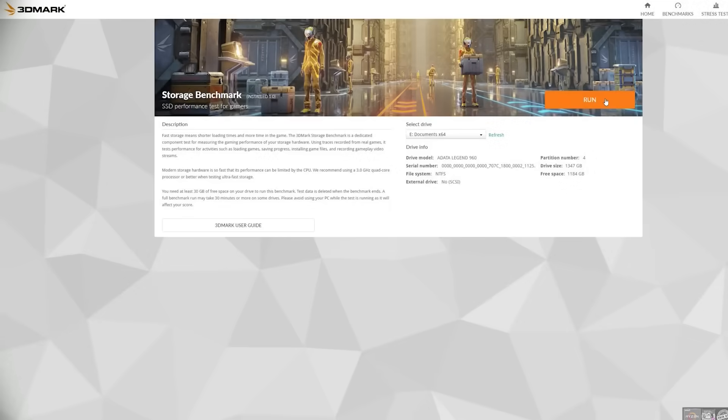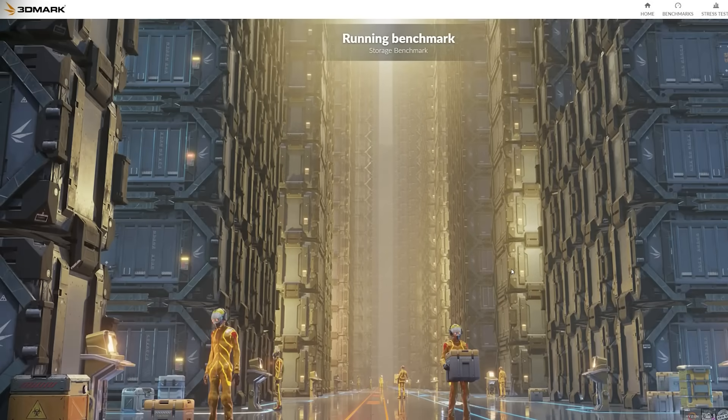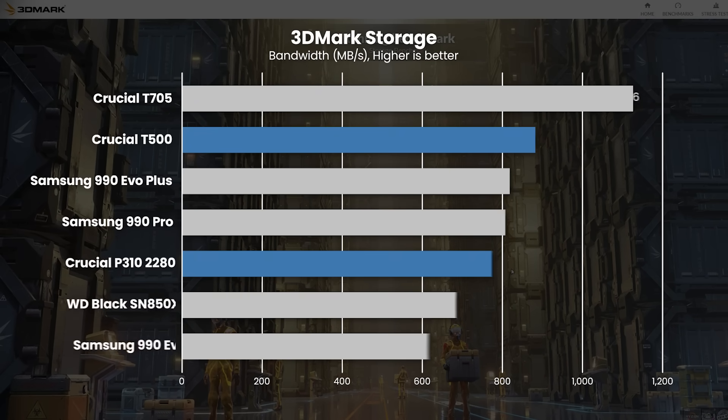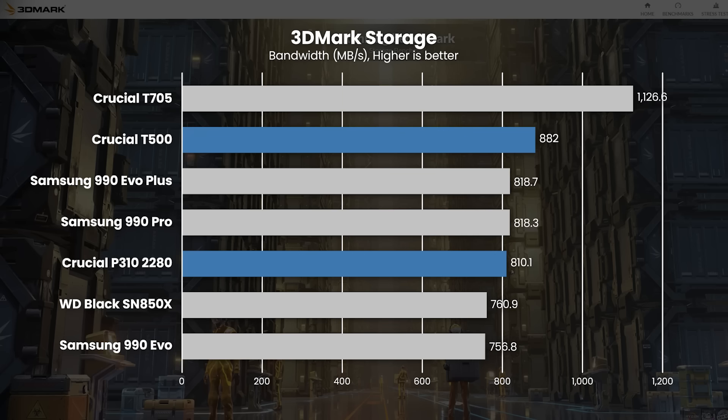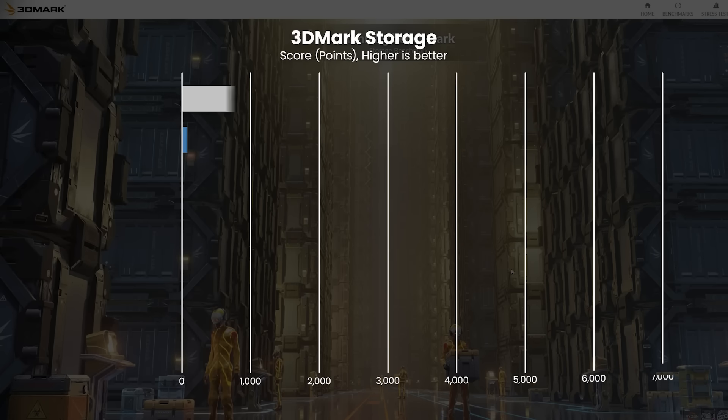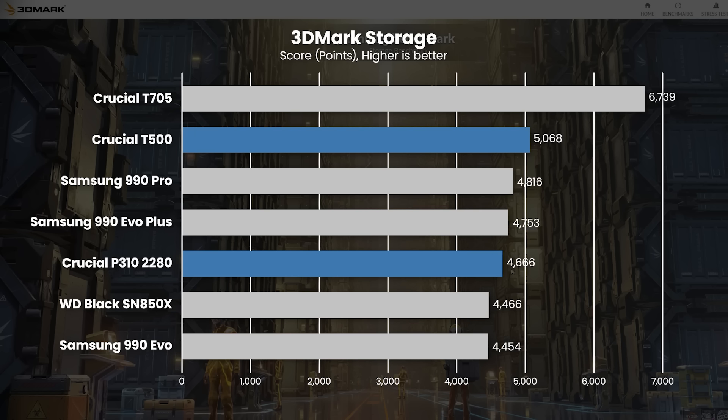So far it sounds like QLC is to be avoided, but that is not the case at all — especially with this P310. The performance available for such a well-priced drive makes it an easy choice for those looking to expand their game library. Using the 3DMark benchmark tool, the bandwidth test for a two terabyte array puts it right up there with considerably more expensive drives such as the Samsung 990 Pro. The same can be said with the 3DMark storage benchmark score, putting it right between the WD SN850x and the 990 Pro. Towards the top of all these lists, however, is the T500.